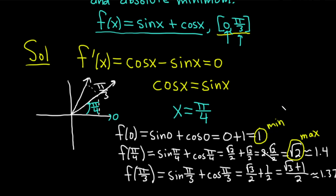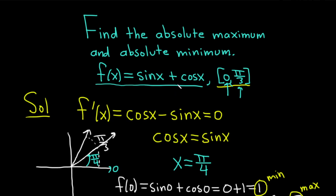Let's go over the steps one more time. Whenever you're looking for the absolute maximum and absolute minimum of a function on a closed interval, you always find the critical numbers. You take the derivative and set it equal to 0. Visually inspect the derivative — is it undefined anywhere? If you have a fraction with division by 0 or something with square roots, check for that. Here there are no issues, so set it equal to 0 and solve.